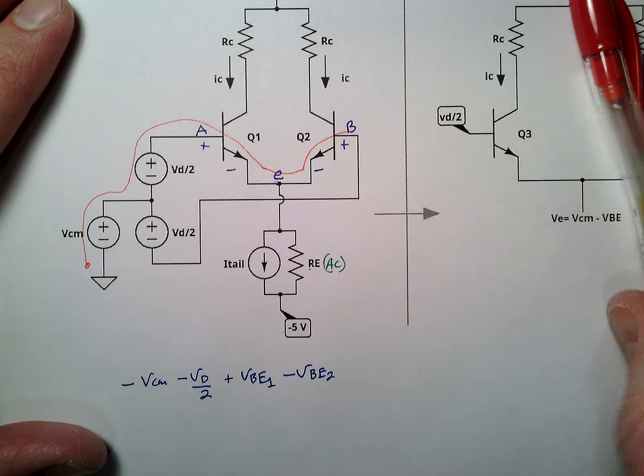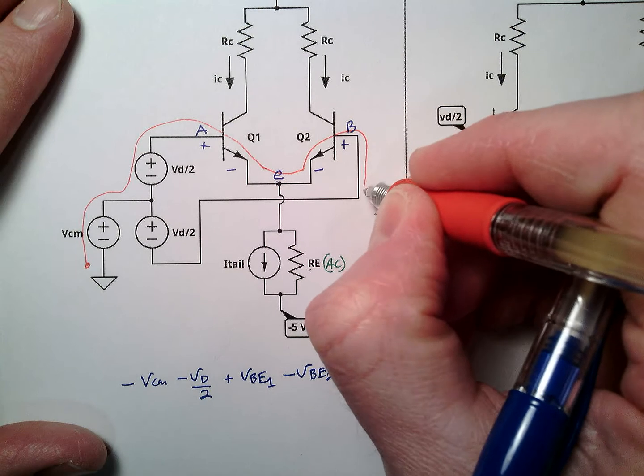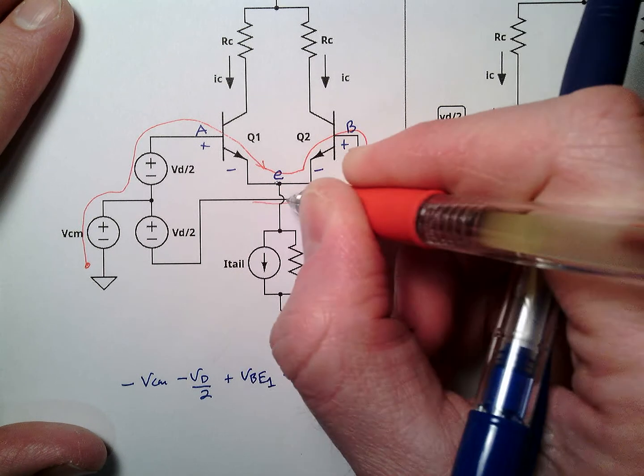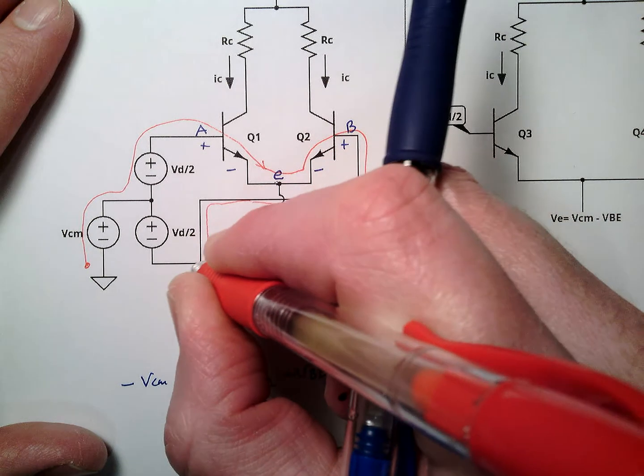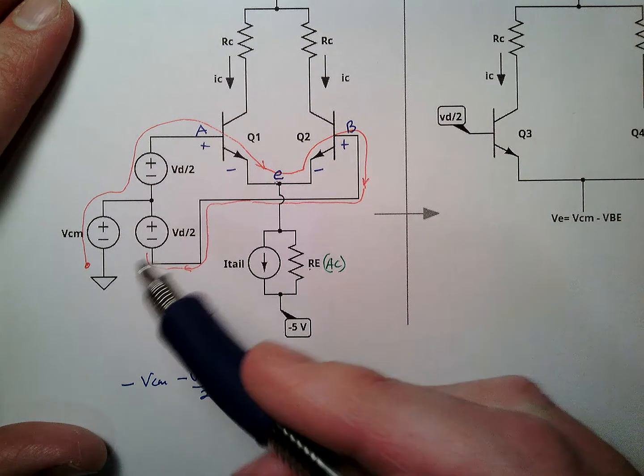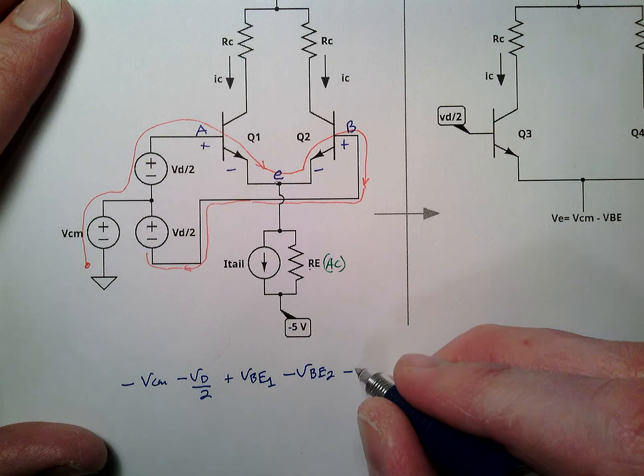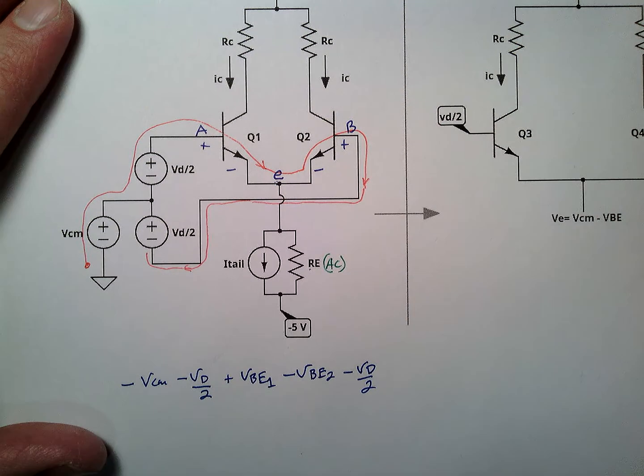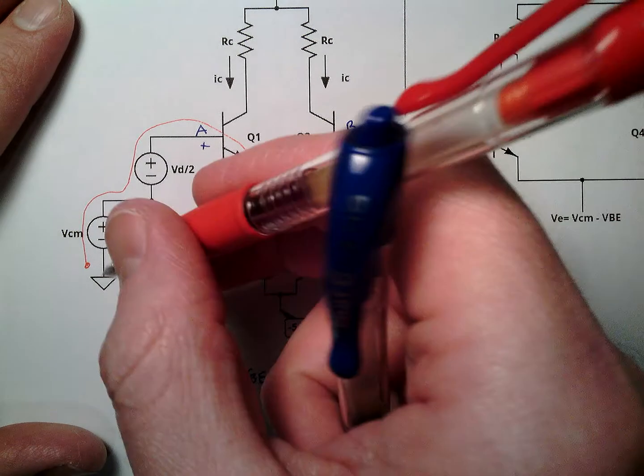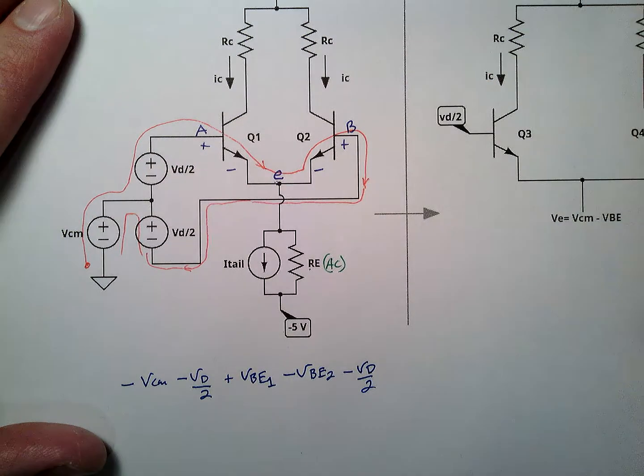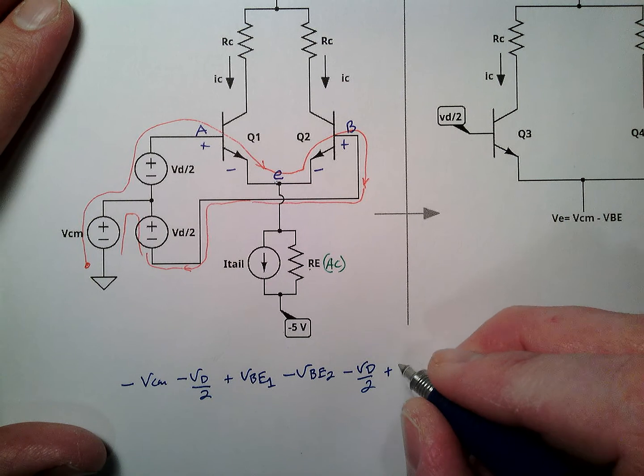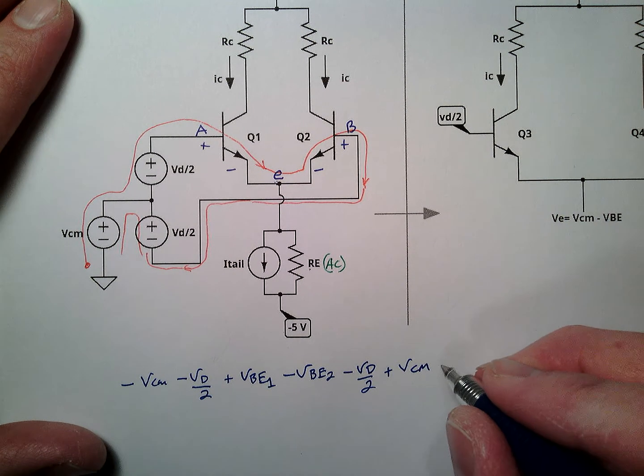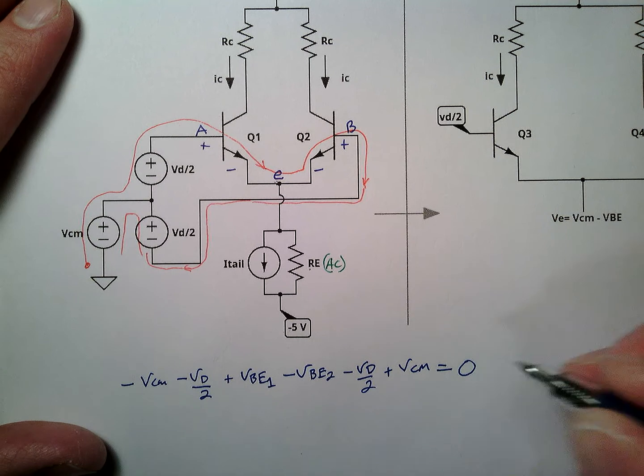And then over here we're going to go around this way, okay, stick an arrow on there, okay, keep going. Keep going, there's no connection there, keep going. And this is a minus VD over 2, come back through here and then plus VCM and that equals 0. This is KVL.